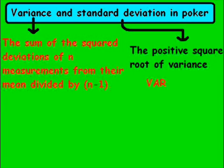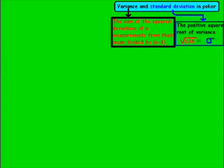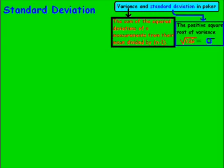In equation form, we take the VAR, or variance, and we take the square root of that. That's going to be equal to the standard deviation, which is the symbol shown there. Next, we're going to take a look at what we use the standard deviation for.